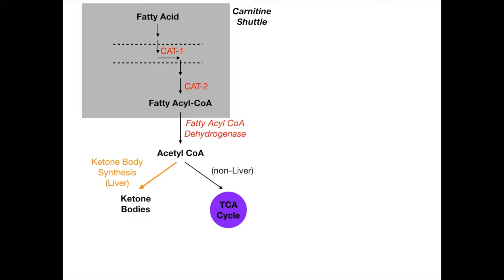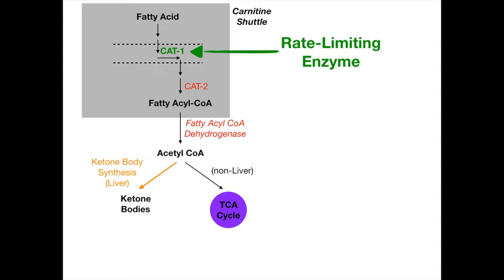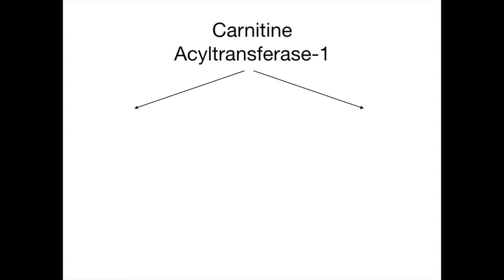Other extremely high-yield topics include the rate-limiting enzyme, what negatively impacts this pathway, and key diseases. The rate-limiting enzyme of beta-oxidation is CAT-1, also known as carnitine acyl transferase 1. Although the carnitine shuttle is technically separate, people refer to the entire process as beta-oxidation, so CAT-1 is considered its rate-limiting enzyme.